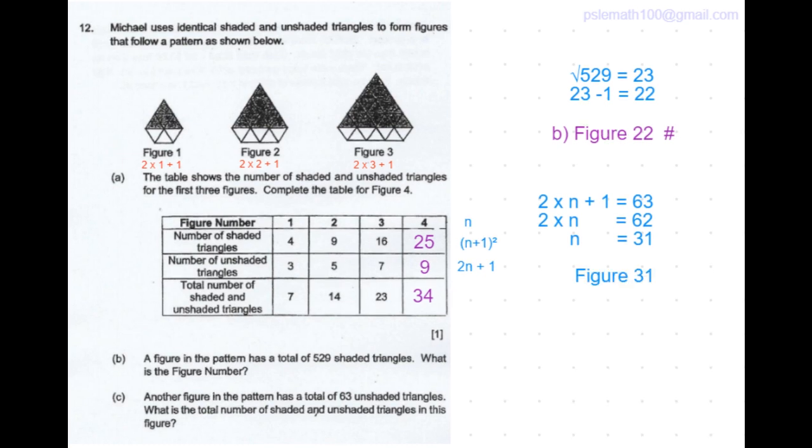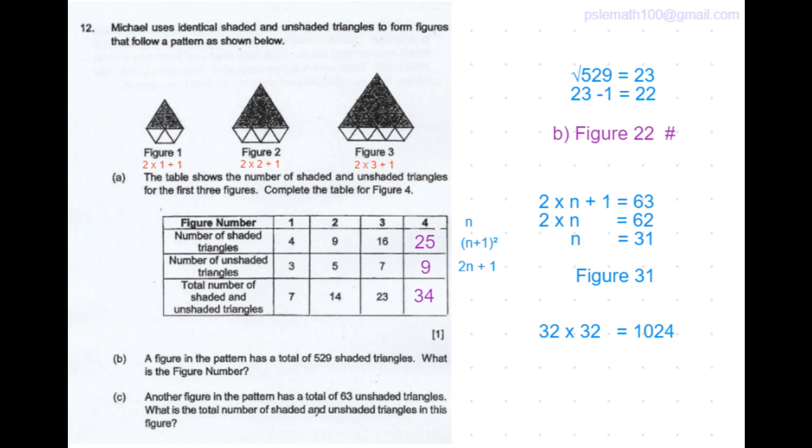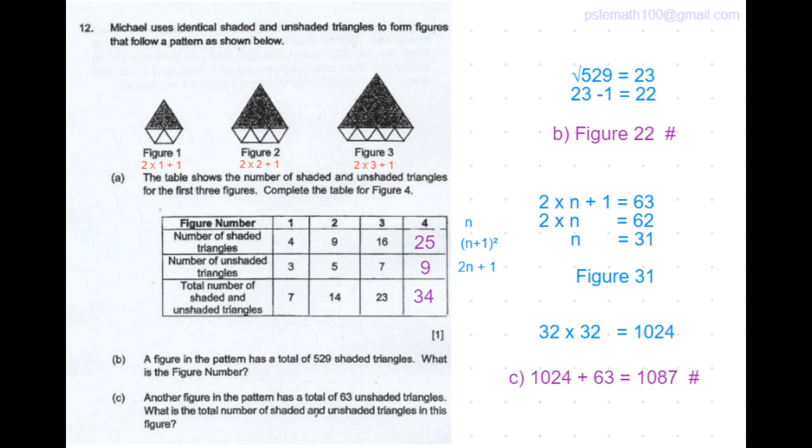The question is what is the total number of shaded and unshaded triangles in this figure? For figure 31, the number of shaded triangles is 32 times 32 is equal to 1024 triangles. The number of unshaded triangles we know it to be equal to 63. So that's a total of 1087 triangles. So that's the answer to part C of the question.